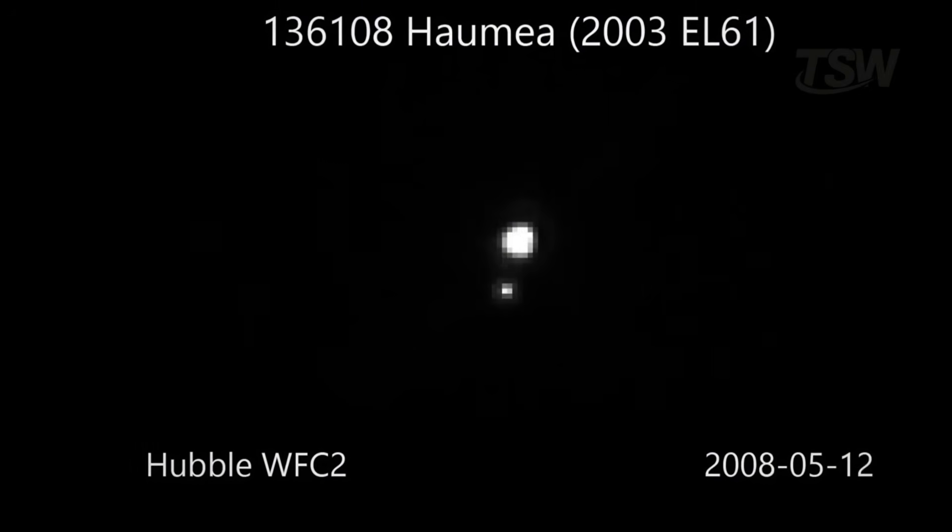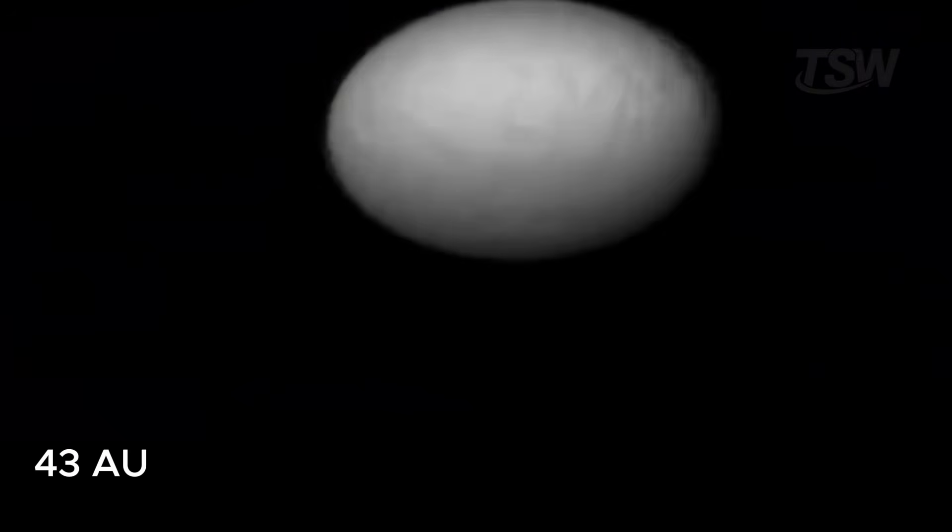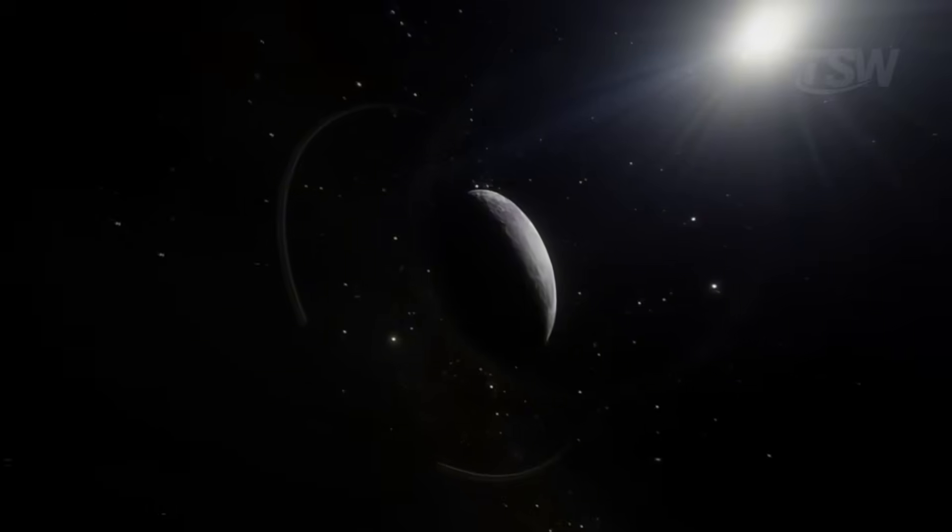Haumea also has two known moons and surprised astronomers by showing rings around it, something previously seen only in giants like Saturn. It's located about 43 astronomical units from Earth, meaning it's 43 times farther from the Sun than we are.